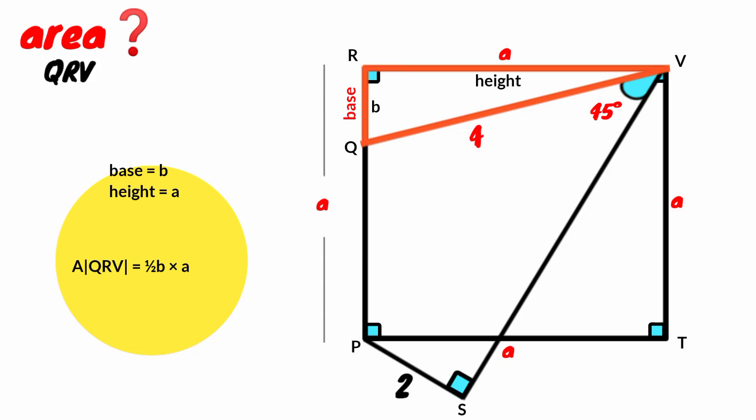Substitute it here. 1 over 2 B times A is 1 over 2 AB. So area of triangle QRV equal to 1 over 2 AB. Keep it aside.